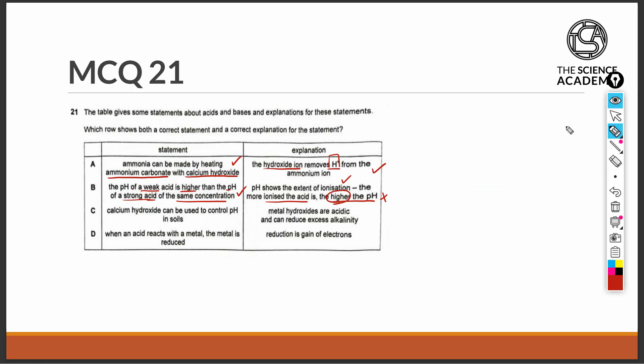Option C states that calcium hydroxide can be used to control pH in soils. That is correct because calcium hydroxide is basic and it can help to improve acidity in soil by neutralizing the acids. Metal hydroxides are acidic. This statement is not true. Metal hydroxides are basic and can hence reduce acidity.